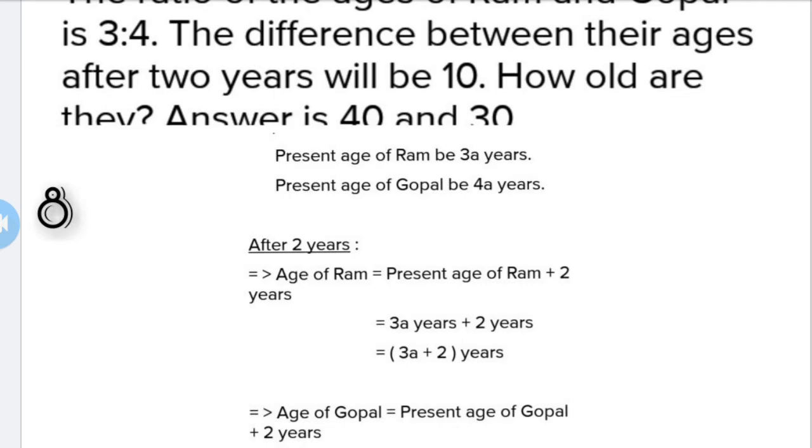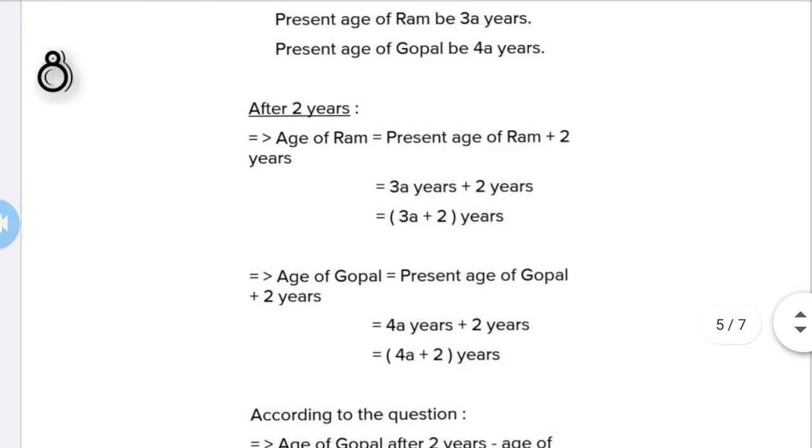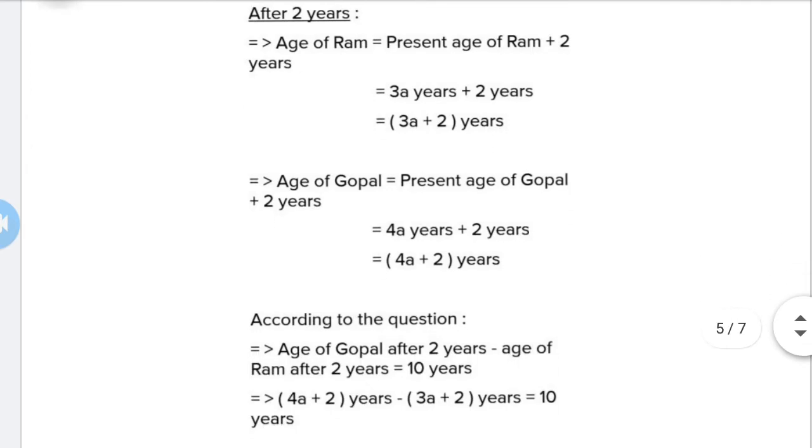Ram's present age is 3a, and Gopal's present age is 4a. After 2 years, Ram's age will be 3a plus 2, and Gopal's age will be 4a plus 2. According to the question, we will solve using the difference in their ages.